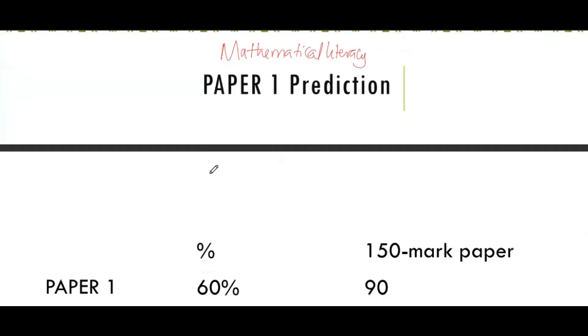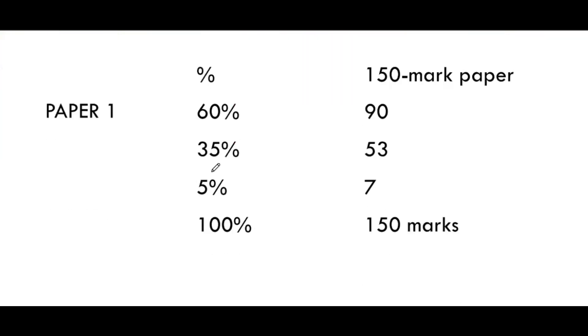But what do we mean expect? All right, here we go. First and foremost, paper one, it's out of 150. Of 150, 60% is going to come from question. This is what? This will be finance. And 35%, this is data, data handling. And 5%, this will be what? Probability.